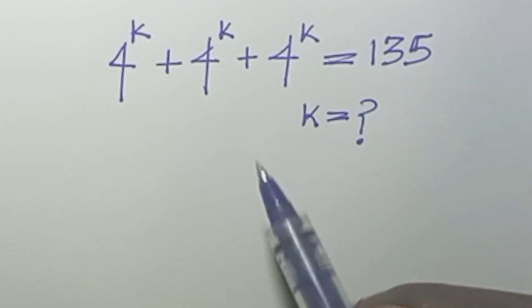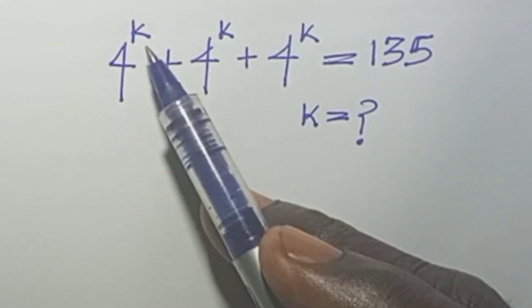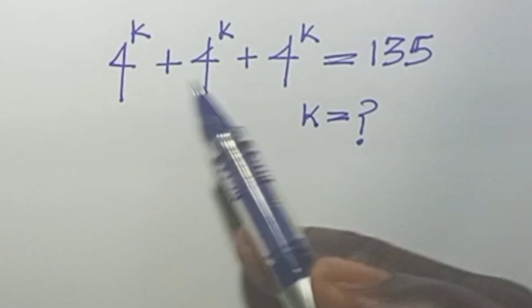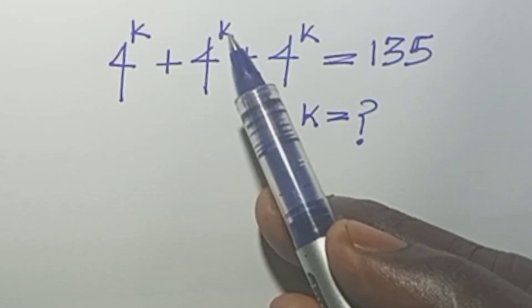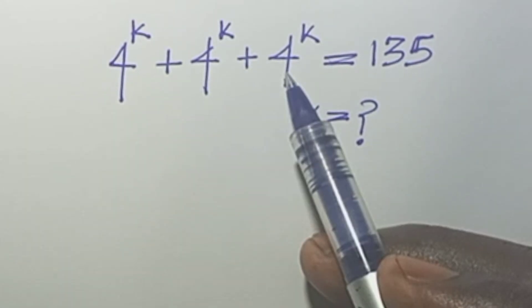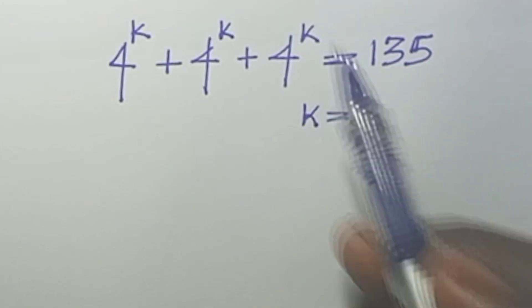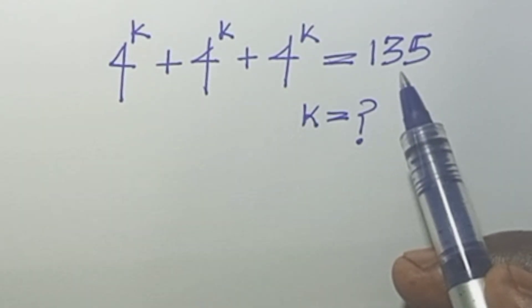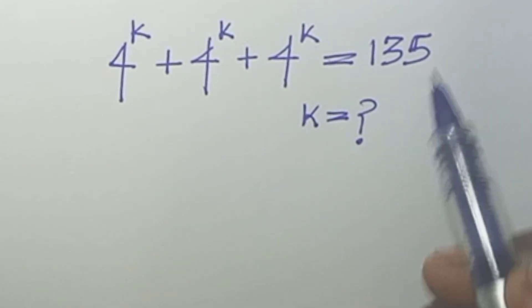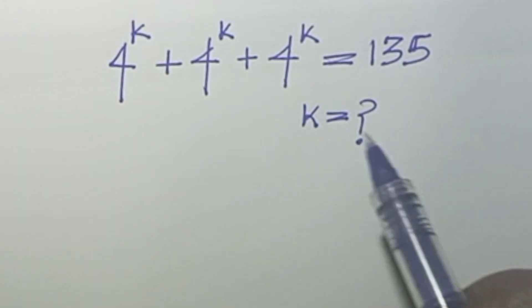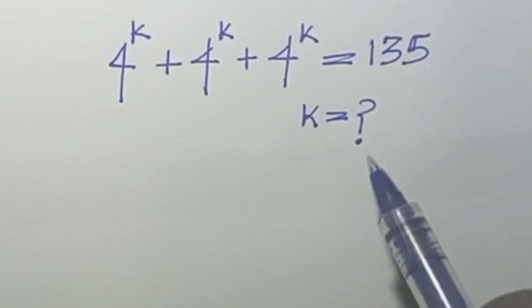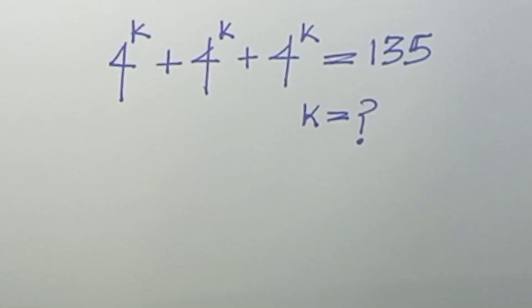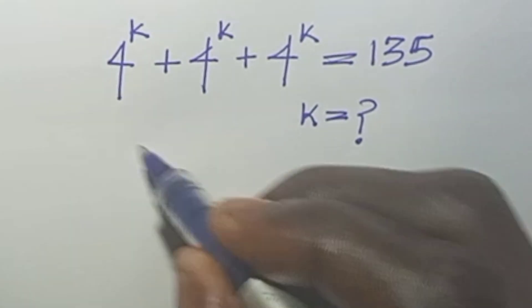Hello everyone. Today we have 4 to the power of k plus 4 to the power of k plus 4 to the power of k, all equal to 135, and k is the unknown. We're going to solve this together — let's take the solution.